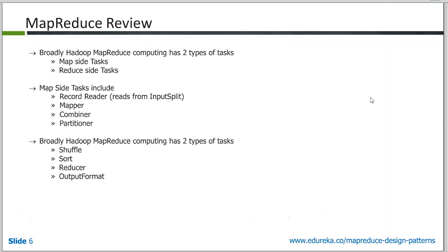Then we have the combiner, and the combiner is an important aspect of a lot of design patterns. In some cases the combiner might not be very useful, but in other cases it can be very useful. For problems where you have a lot of data being transferred across the network from the mapper side to the reducer side, you should definitely look at using the combiner if the problem allows it. We'll see in which cases it's useful and in which cases it's not.